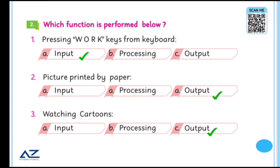Next, which function is performed below? Pressing work keys from keyboard is basically input. When you enter something from keyboard, because keyboard is input device, it is performed in the input task. Picture printed by paper, if you print any pictures, because it is output device, you have put it in the output. This way when you print papers and pictures, it is output.